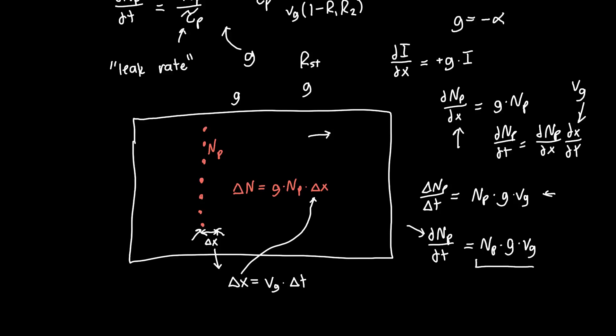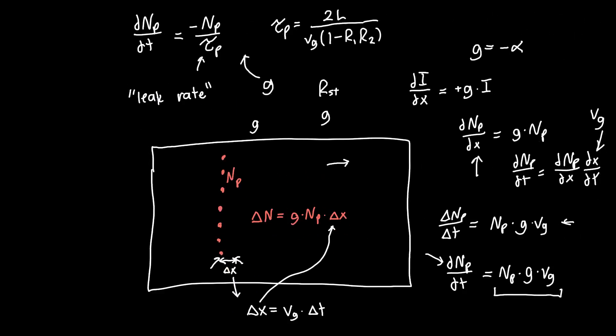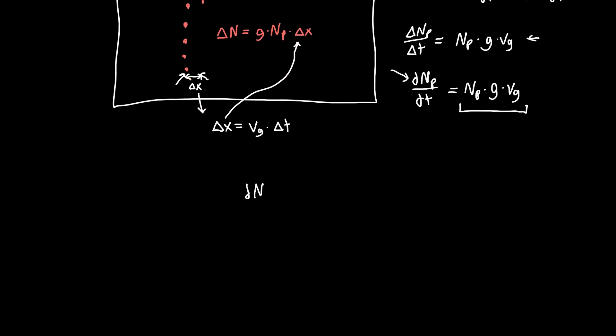And so now we have our stimulated emission term. We can put that back into our original differential equation. So dNP/dt now has two different sources. The first is that we've got leakage of photons outside the cavity. So when our photons hit the mirrors on the side, some of them will escape. But we've also got gain, which is contributing additional photons. So plus NP times our gain times the group velocity. This term corresponds to stimulated emission, this corresponds to mirror loss, and these are the photons that escape that we can actually use to do things outside of our laser.